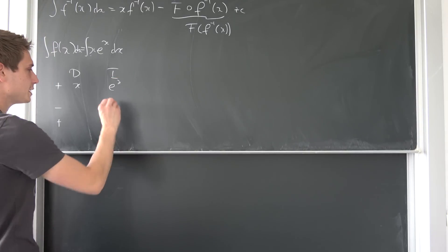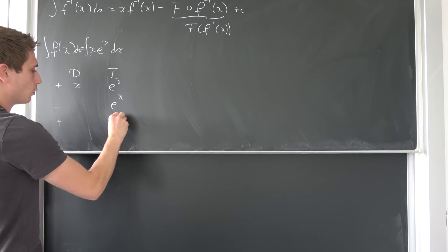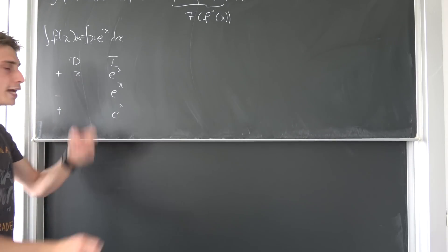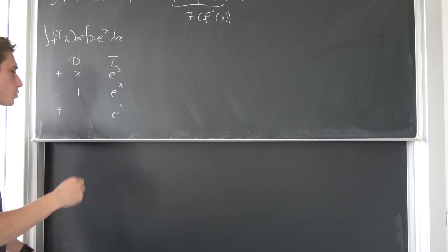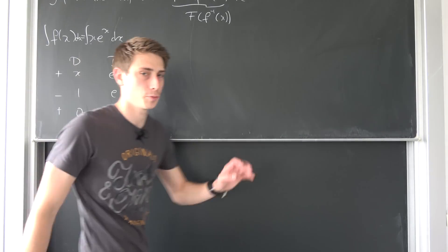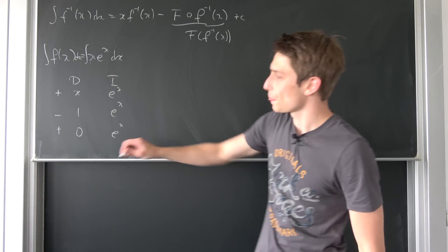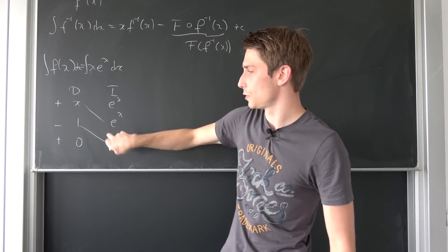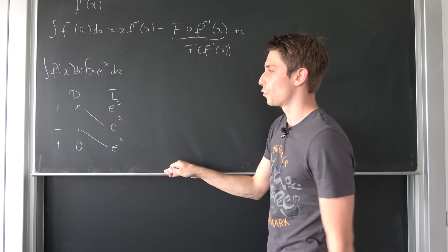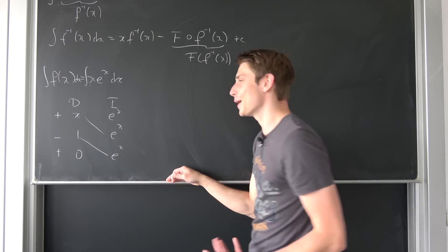Integrating this is actually quite easy, just gives us e to the x all the time, and differentiating x, well, first iteration is just one and the second iteration is going to be zero. So that was quite easy. Multiply this together and subtract this multiplication from this thing right here and then we are done.